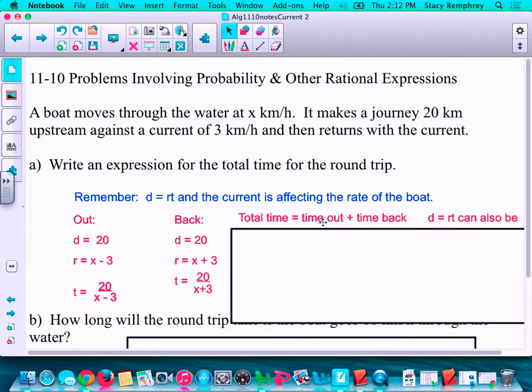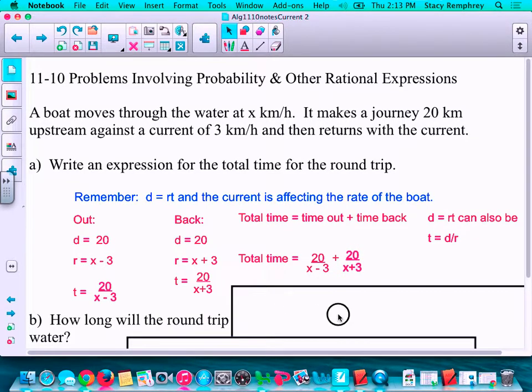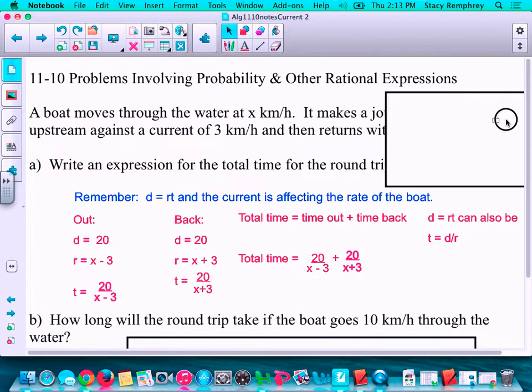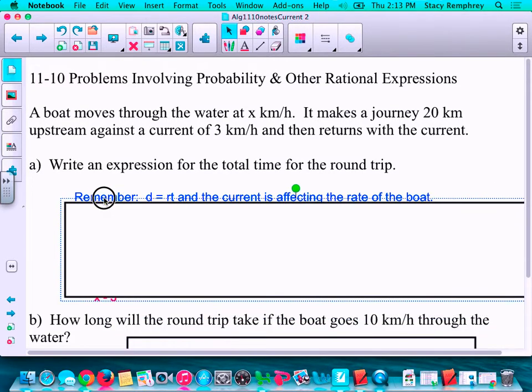Total time is going to be how long it takes you to go out plus how long it takes you to come back. So for the total time, all I had to do, and this is your answer right here, is total time equals, this is what represented the time out, plus this is the expression to represent the time back. I think we're just going to delete this box now.